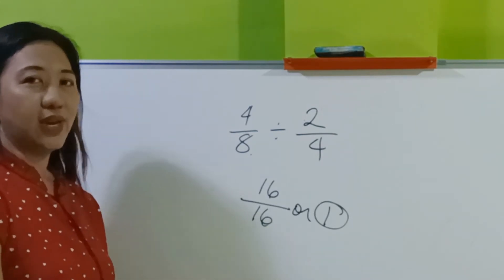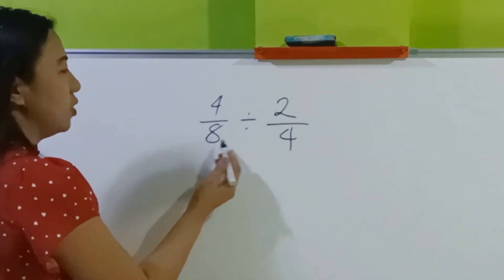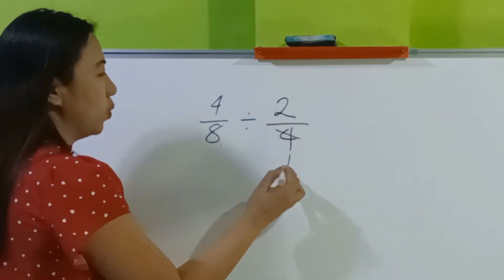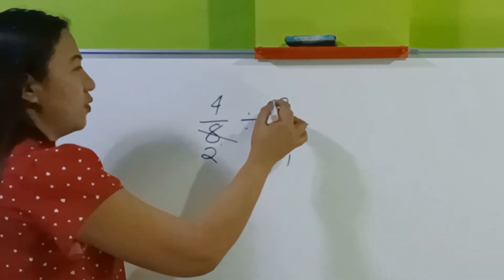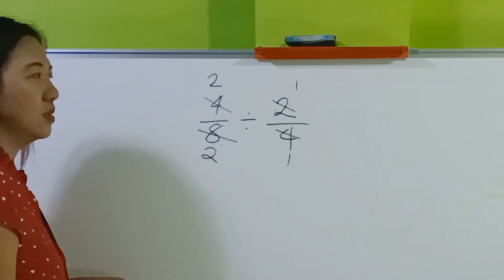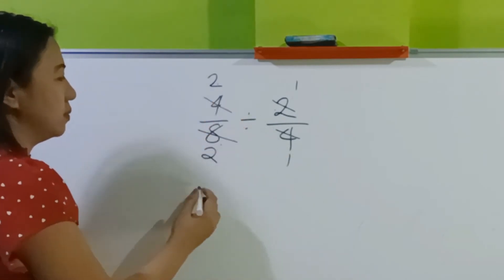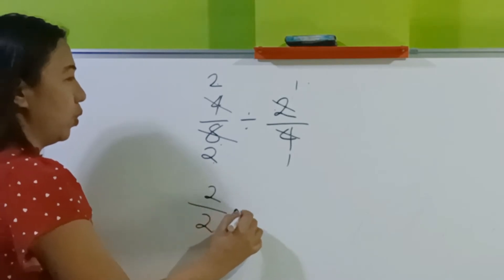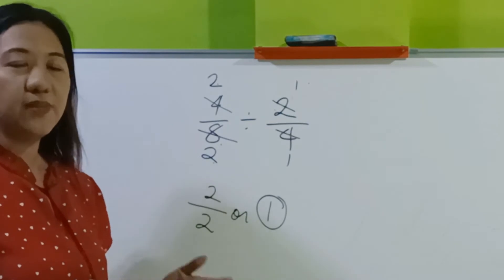Again, the shortcut of shortcut. What can you divide each by? 4 — so 4 divided by 4 is 1, 8 divided by 4 is 2. How about 2 and 4? 2 divided by 2 is 1, 4 divided by 2 is 2. Next, cross multiplication: 1 times 2 is 2, 2 times 1 is 2, which equals 1. We have the same answer.